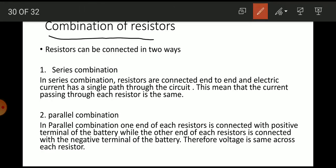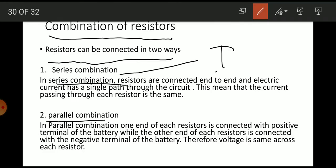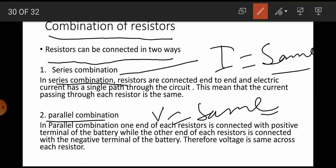Combination of resistances: resistors can be connected in series or parallel. In series combination, resistors are connected end to end and electric current has a single path through the circuit, meaning the current through each resistance is the same. In parallel combination, the voltage across each resistor is the same.